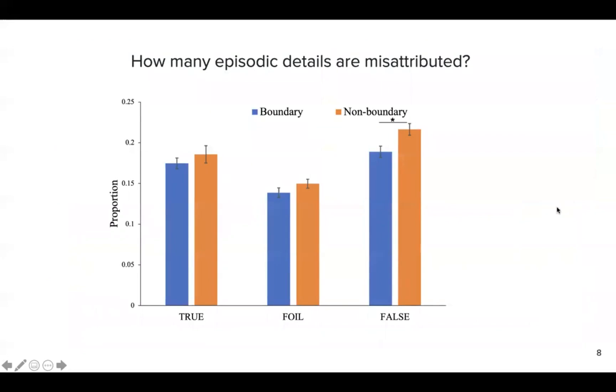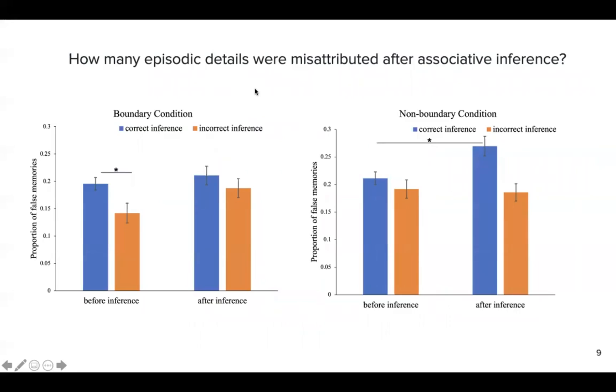So what did we find? We find that generally people in the non-boundary group will be more likely to make memory misattributions. And we also break down the misattribution results by the associative inference test order and their results.